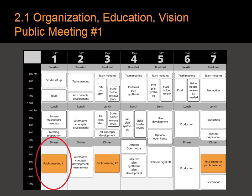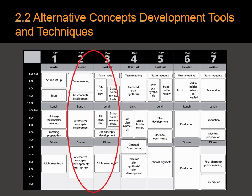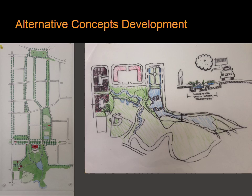Here we have the first public meeting on the first night. This meeting was highlighted by the vision exercises talked about in the very first module. This is where the community gets to be the experts for the night — they draw, make lists, prioritize, and tell the Charette team what's important to them. The Charette team then begins to work on alternative concepts over the next day or two, working on drawings of different urban design, transportation, and environmental investigations.